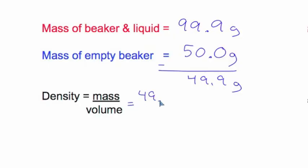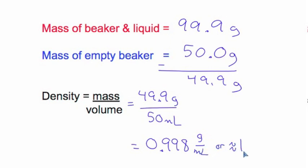Density is mass divided by volume. The mass is 49.9 grams and the volume is 50 milliliters. That works out to 0.998 grams per milliliter, which we can round to approximately 1.0 grams per milliliter.